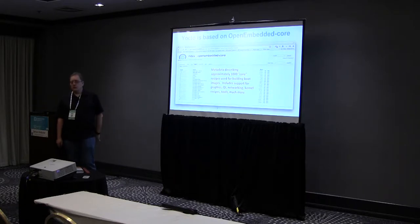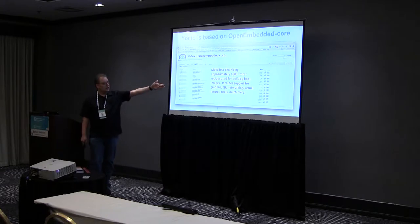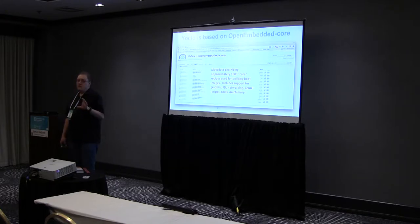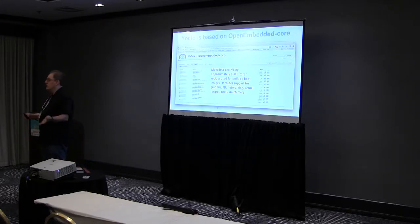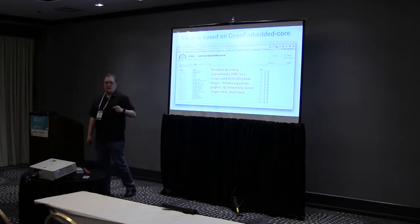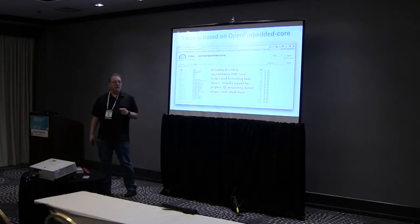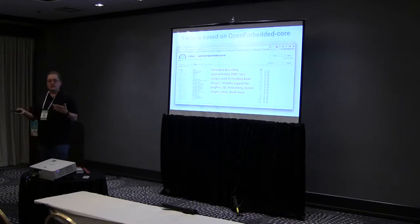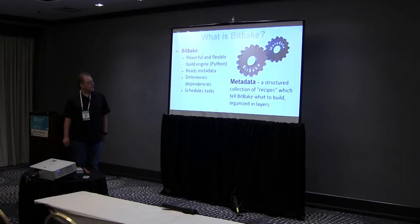In the OpenEmbedded git repository you'll find the meta directory with around a thousand different kinds of recipes. A recipe is a file that tells you how to go from source code to a working package that can be installed on an image. There are a lot of food-themed things here — BitBake's core is called 'cooker,' there was a tool called 'hob' which is essentially an oven, and there's also 'toaster.'